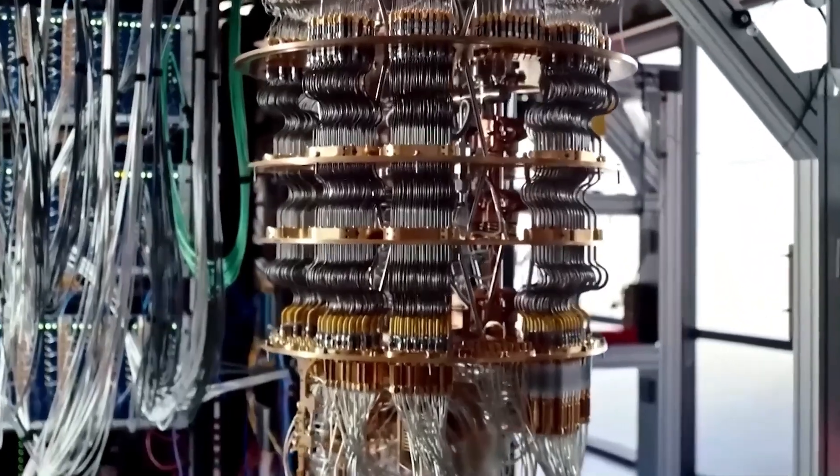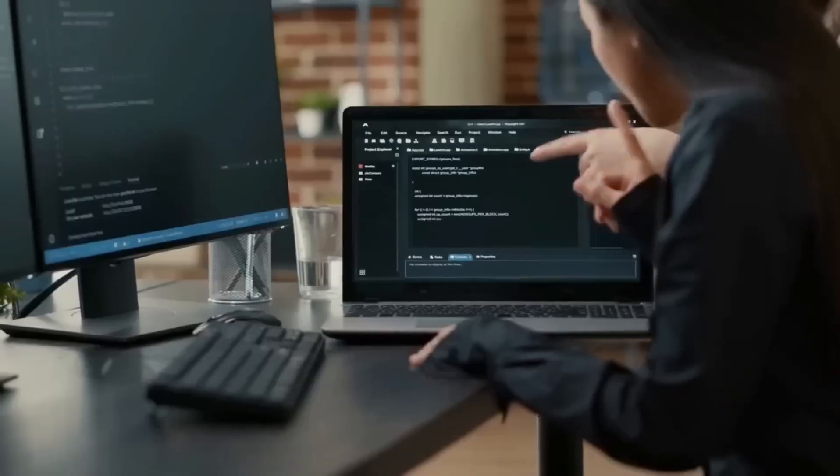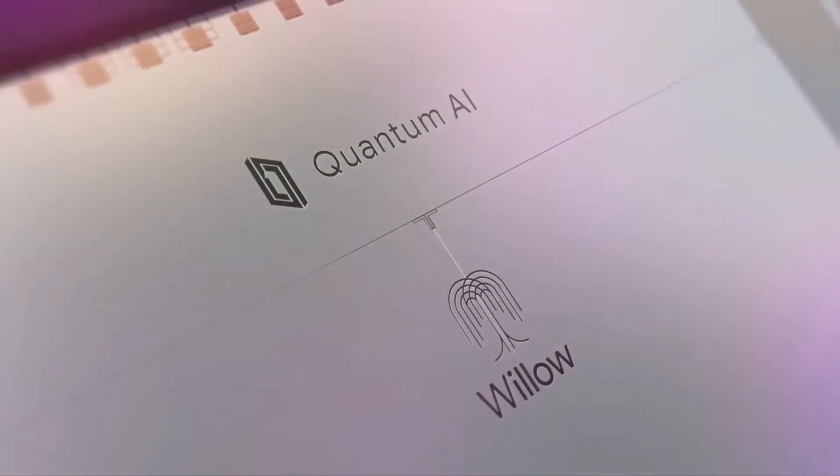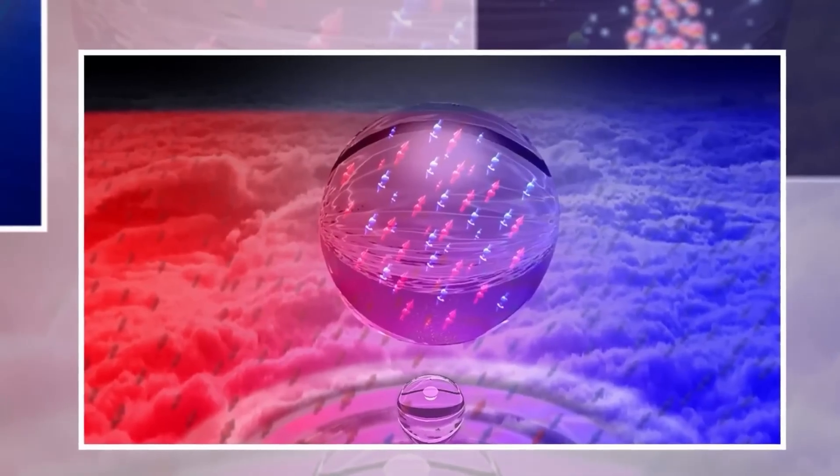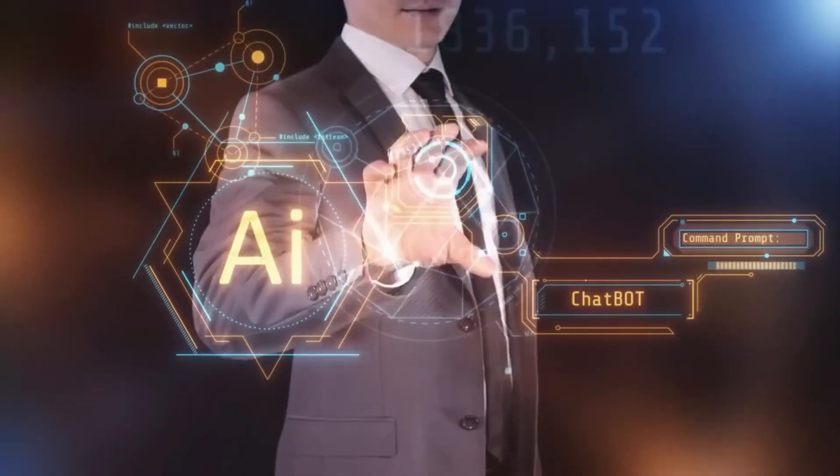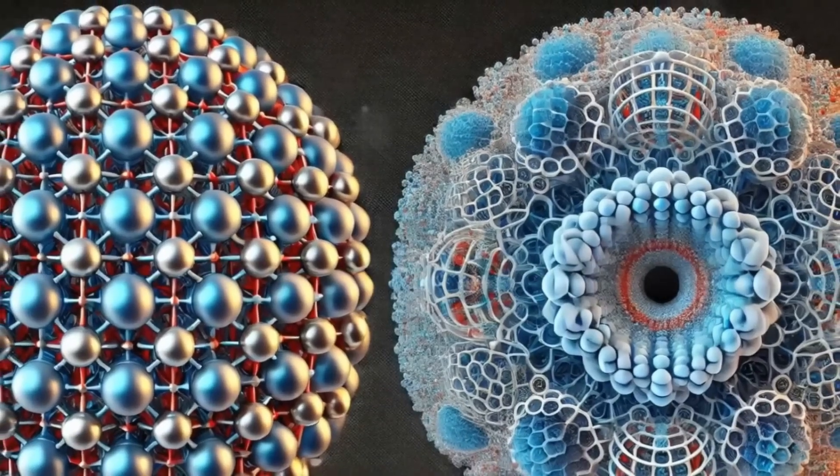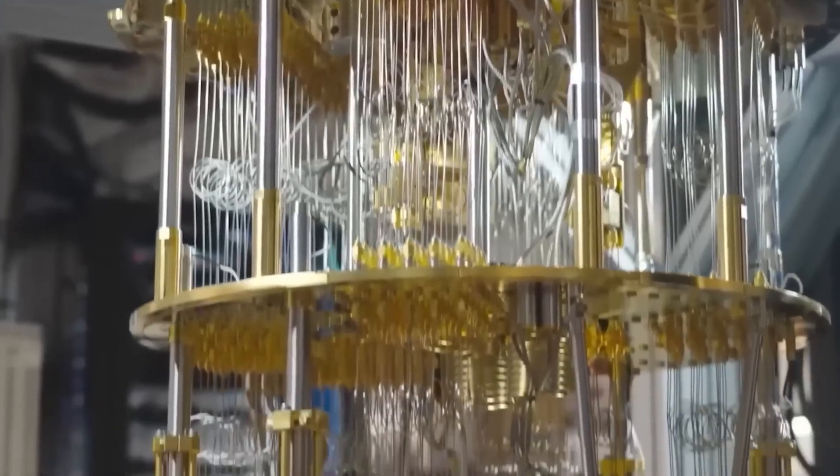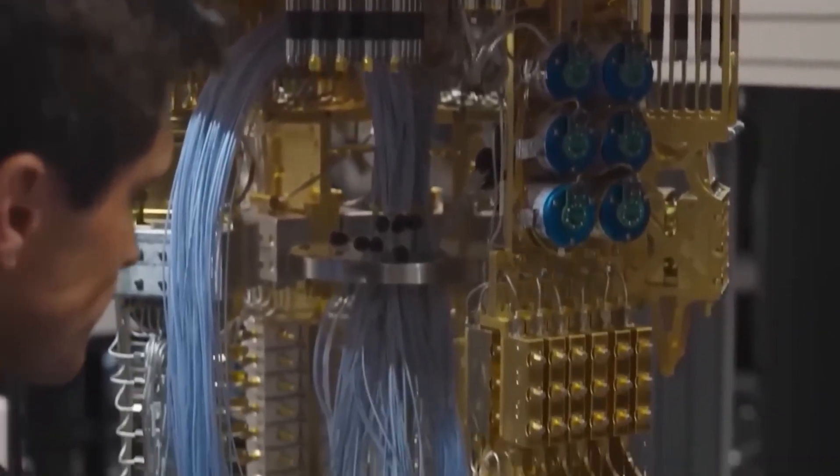Here's where physics gets truly bizarre. The vacuum of space isn't empty. It's a bubbling sea of virtual particles and energy. The Casimir effect already proves we can manipulate vacuum energy between plates. If quantum AI could design configurations to shift vacuum energy density locally, it might create pockets where inertial properties change. This isn't science fiction. It's an extension of experiments already happening in advanced physics labs.